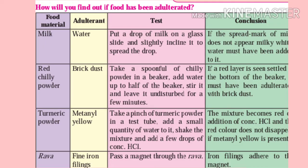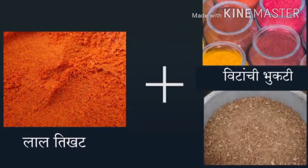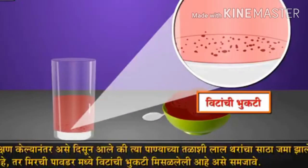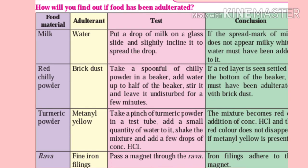Number 2. Food material: red chili powder. Adulterant: brick dust. Test: take a spoonful of chili powder in a beaker, add water up to half of the beaker, stir it and leave it undisturbed for a few minutes. Conclusion: if a red layer is seen settled at the bottom of the beaker, it must have been adulterated with brick dust.